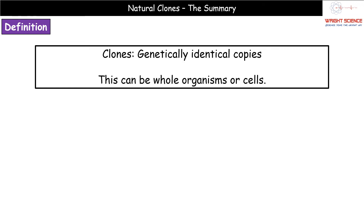The first thing we need to know is the definition of the word 'clone.' We need to make sure we are using the phrase 'genetically identical' — you can't just say they're identical. When we talk about clones in A-level biology, it's not just whole organisms; we can also talk about clones of cells. A clone may be an entire organism but it may just be a group of cells.